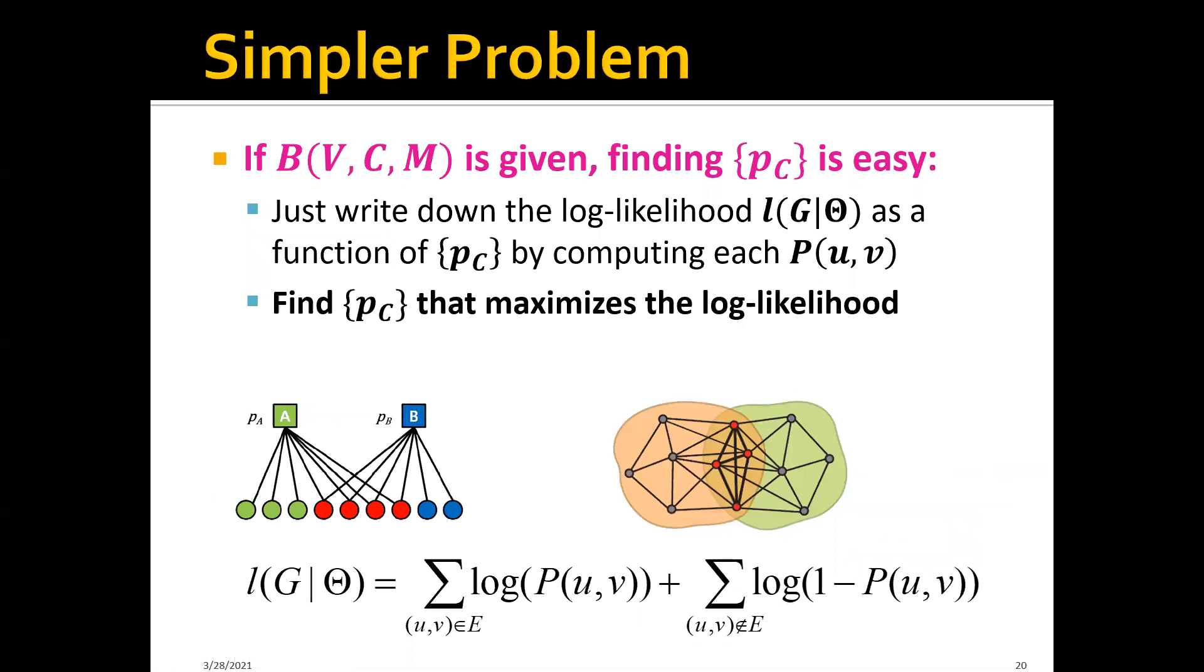Now let's consider a simpler problem. Let's say that most of the parameters inside θ are already given, and we only need to find the optimal PC. Remember PC is the probability that there is a link between two nodes if both of the nodes belong to C.